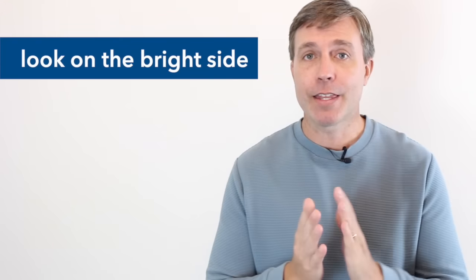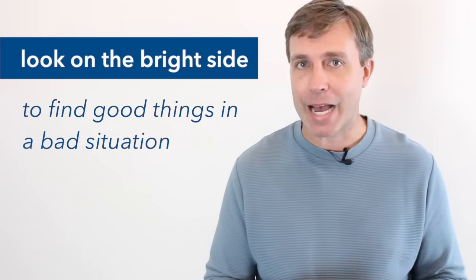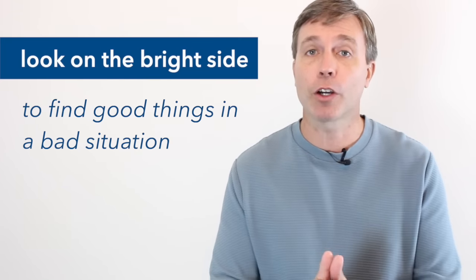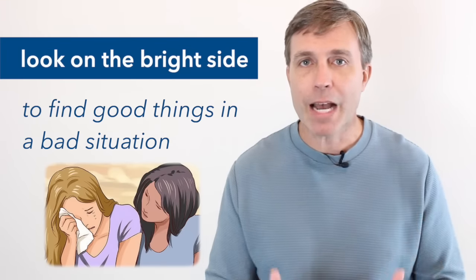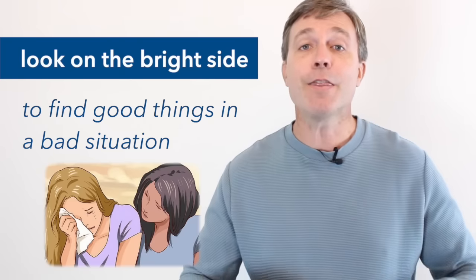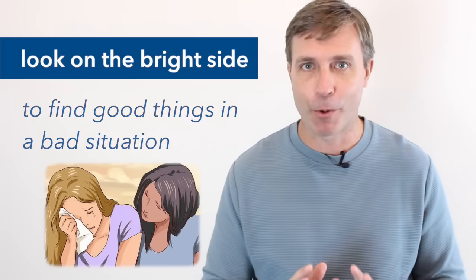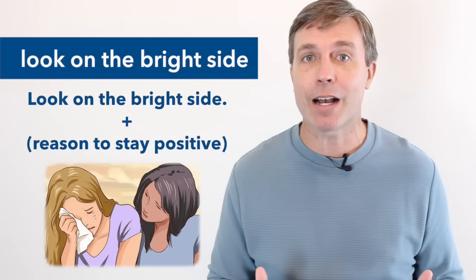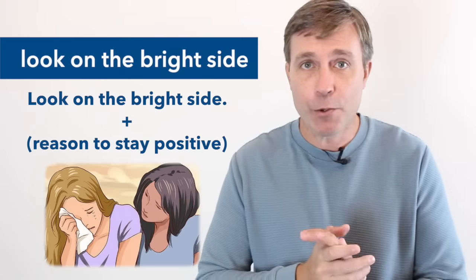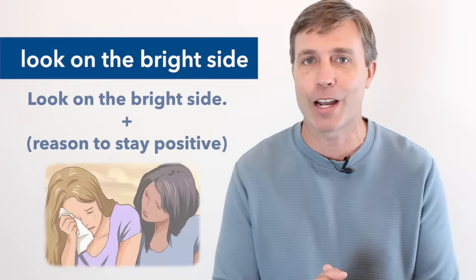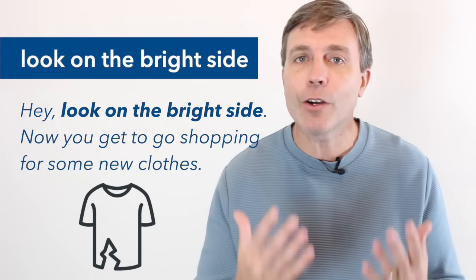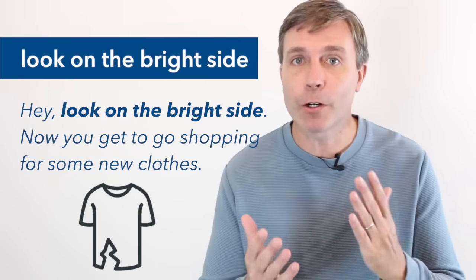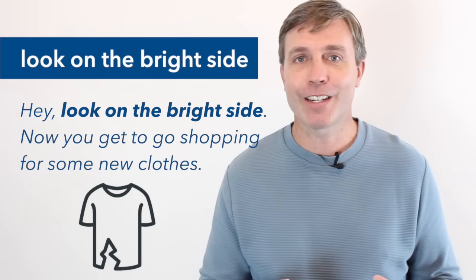The next C1 phrase that I have for you is to look on the bright side. And this just means to find good things in a bad situation. And you would tell someone to look on the bright side. So think about it in the context of trying to cheer someone up. And there's a bad situation, and you tell them, look on the bright side. And then you would follow it with a reason. And that's really important. So you're telling them to cheer up, try and stay positive. And then you got to give them a reason why. If you just say, look on the bright side and don't say anything else, then it's going to seem a little strange. So let's say you tear your new shirt and you're really upset about it. And I'm trying to cheer you up. And I say, hey, look on the bright side. Now you get to go shopping for some new clothes and you get to find a new shirt and you can look on the bright side.